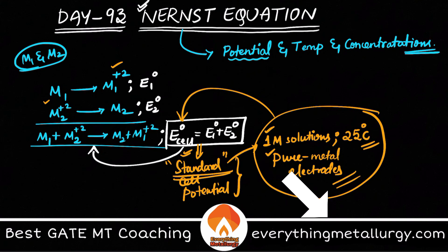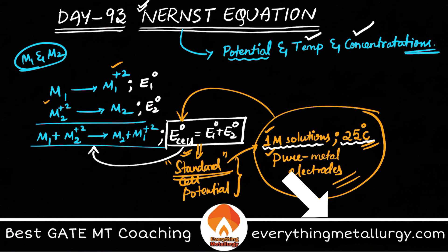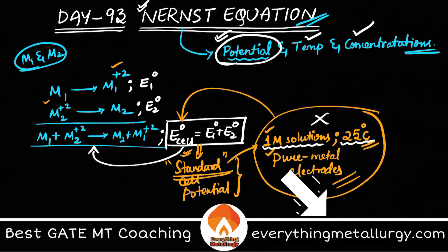Pure metal electrodes will be present even at higher temperatures, but the two key assumptions for 'standard' are concentration and temperature. So what if you are setting up a cell in a non-standard concentration and non-standard temperature — other than one molar and 25°C? What happens to the potential? That is explained by the Nernst equation.